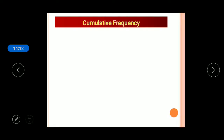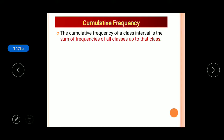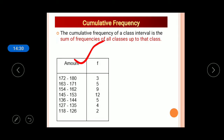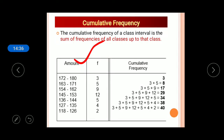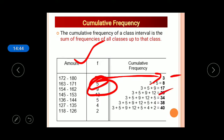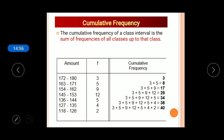The last concept is cumulative frequency. The cumulative frequency of a class interval is the sum of the frequencies of all classes up to that class. For example, if the frequencies are 3, 5, 9 and so on, the cumulative frequencies are 3, then 3+5=8, then 8+9=17, and so on. Frequency tells how many observations are in a particular class — for instance, frequency 3 for class 172 to 180 means there are 3 observations in that range.